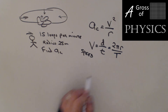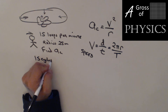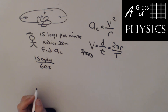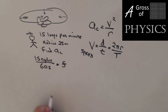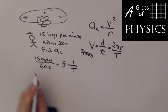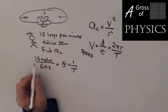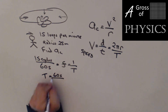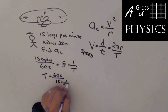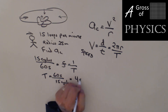The tricky part is converting: 15 cycles per 60 seconds is our frequency. Since frequency and time period are reciprocals, we flip the numbers — the time period is 60 seconds divided by 15 cycles. That gives us T = 4 seconds. This makes sense: 4 seconds per cycle times 15 cycles equals 60 seconds.